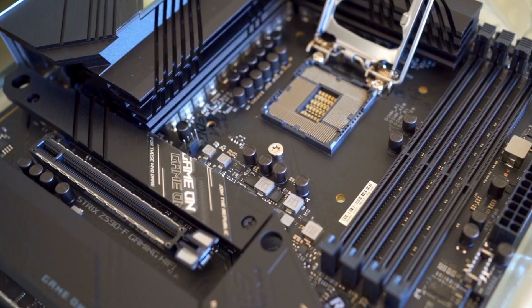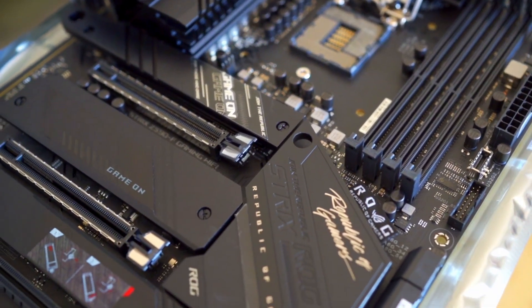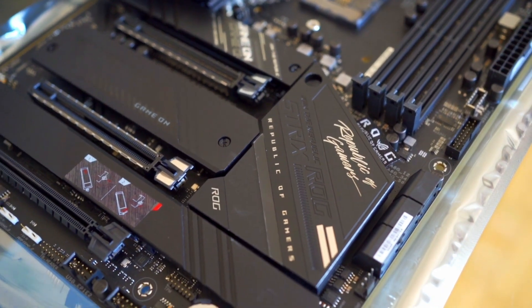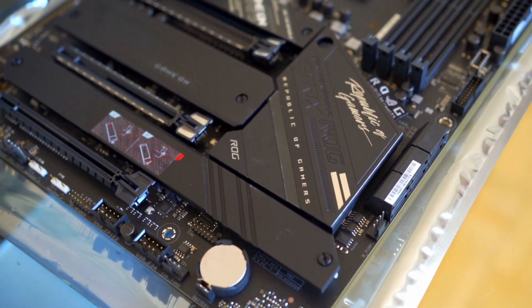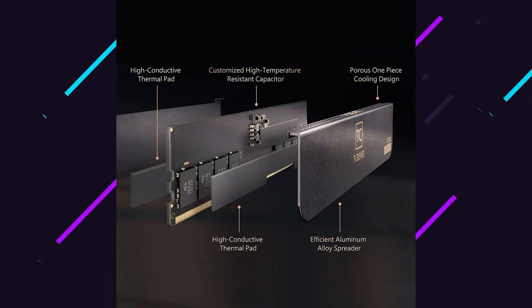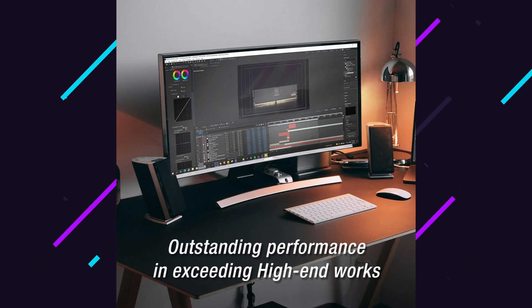When upgrading your computer's RAM, you need to consider compatibility — ensure the new RAM matches your motherboard's supported type, for example DDR4, and maximum capacity. For installation, insert your RAM sticks into the appropriate slots on the motherboard, usually in pairs for dual channel configurations. After that, go into the BIOS and ensure that your RAM is recognized and running at the correct speed.